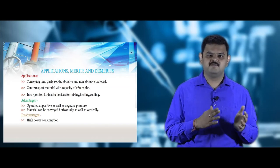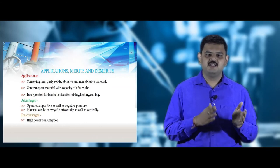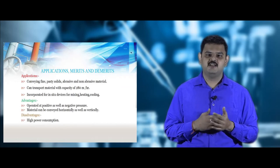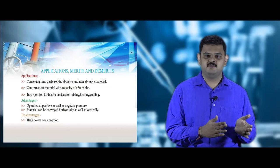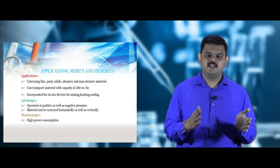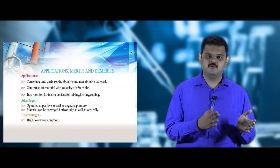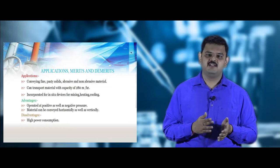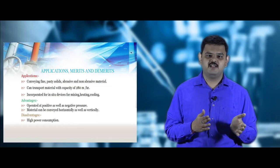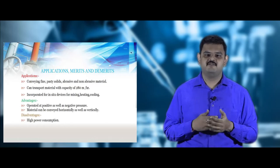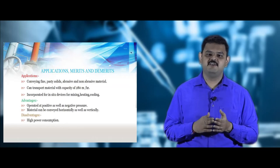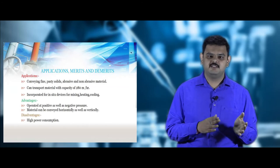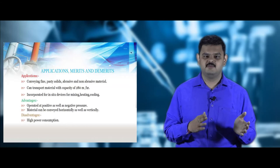Screw conveyors are used for transporting pasty, cohesive, abrasive, and non-abrasive materials, and are useful for materials like fertilizers. They allow heating or cooling via the jacketed section. The advantages are that they transfer pasty and cohesive materials and can operate at either high or low pressure and at high or low temperatures using hot or cool water in the jacket. The disadvantage is high power consumption.